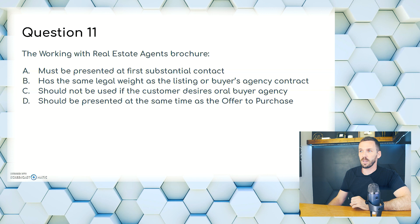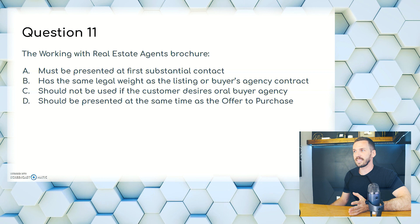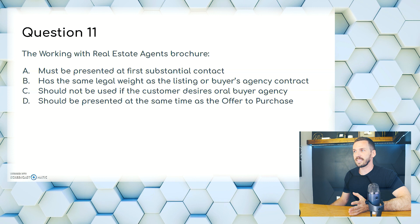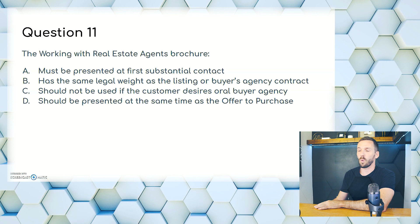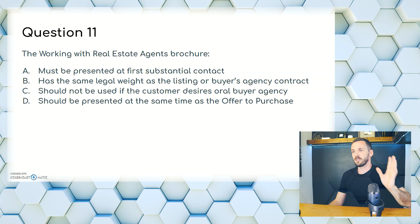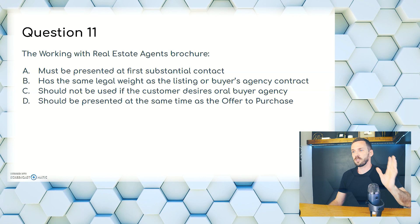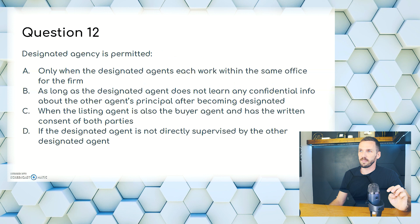Question 11. The Working with Real Estate Agents brochure: A, must be presented at first substantial contact; B, has the same legal weight as the listing or buyer's agency contract; C, should not be used if the customer desires buyer's agency; or D, should be presented at the same time as the offer to purchase. First substantial contact is when the brochure should be presented. The answer is A.